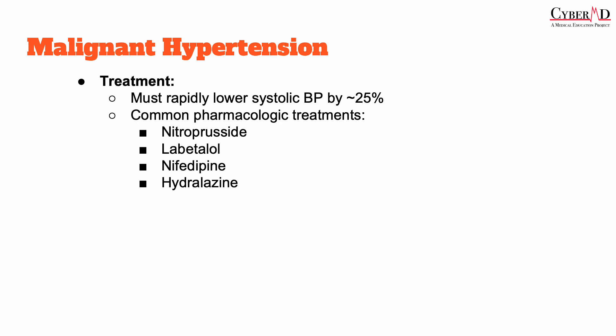Hypertension is suspected if in-office blood pressure is persistently elevated on two or more separate measurements, typically more than two weeks apart, and is confirmed with out-of-office, at-home blood pressure measurements. This is very crucial and important to remember for your boards.